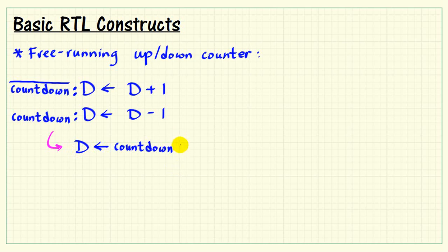We can write this using the ternary assignment technique. This is syntax borrowed from C language and also Verilog language. And that says that we evaluate the expression countdown. If it's a 1, then we pick D minus 1. Otherwise, we pick D plus 1, and that's the value that gets fed to D.